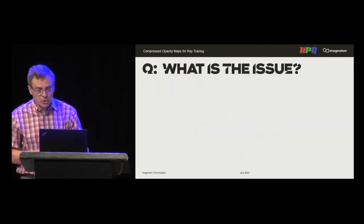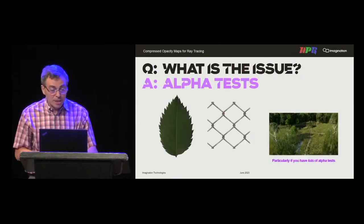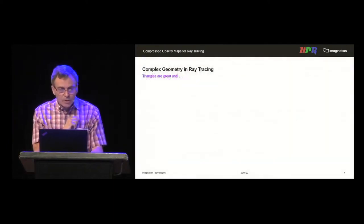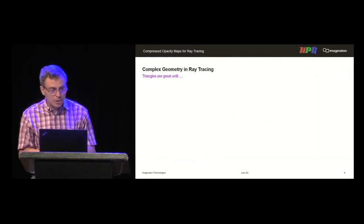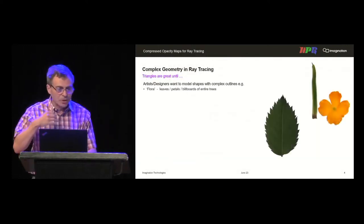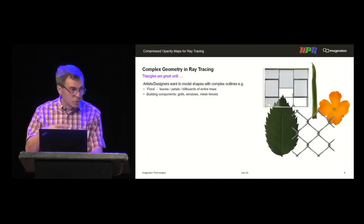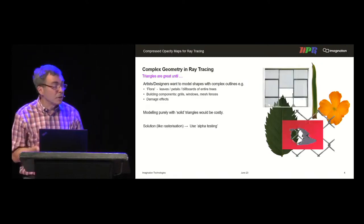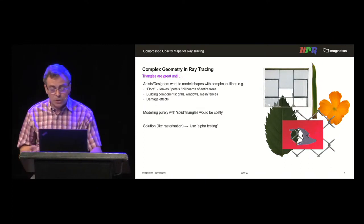So what is the issue? In 2020, Gruen et al. described the problem — and since that was during lockdown, we could all do with a reminder. The answer is basically alpha tests, particularly if you've got a lot of them. Standard triangles are useful for typical teapot, bunny, or dragon models, but artists want to do things like flora, complicated shapes on leaves, building components, grills, windows, and damage effects. Modelling these with solid triangles would be costly, so the solution, like rasterisation, is to use alpha testing.